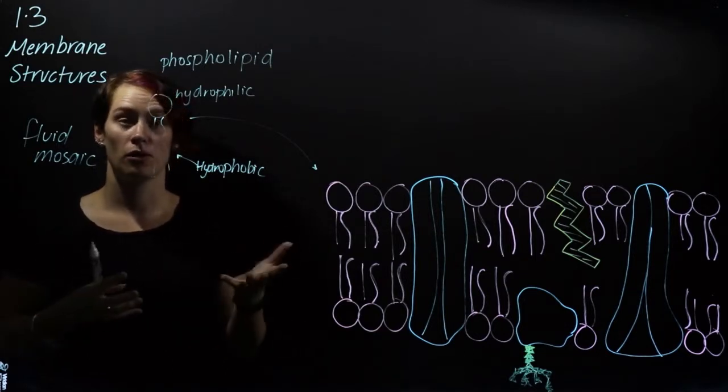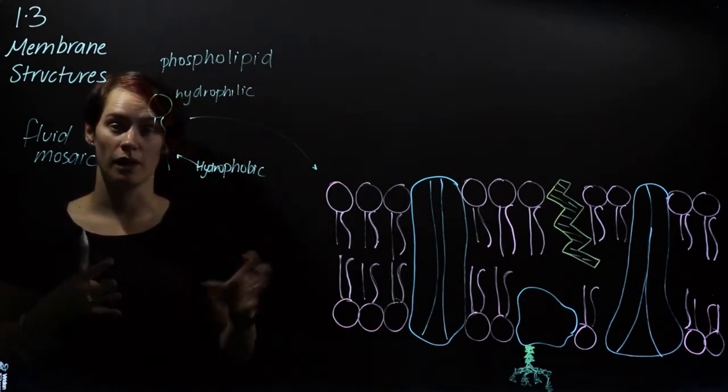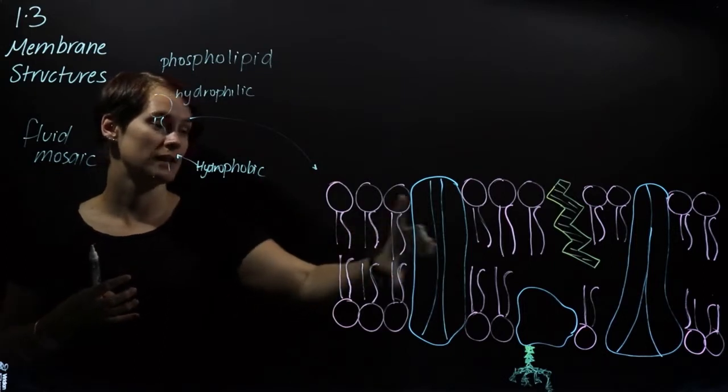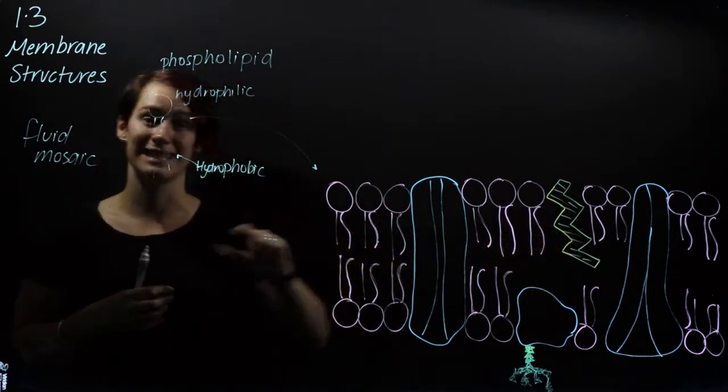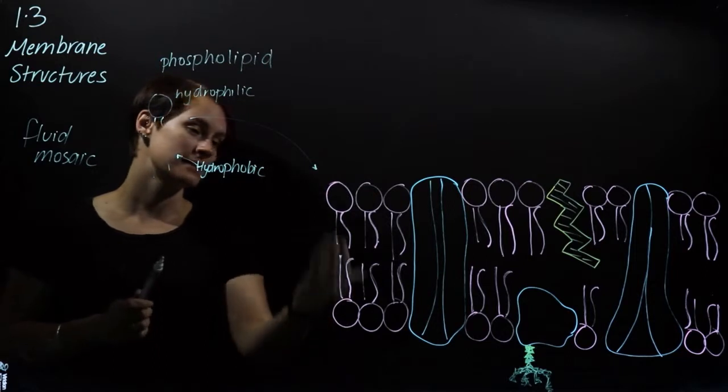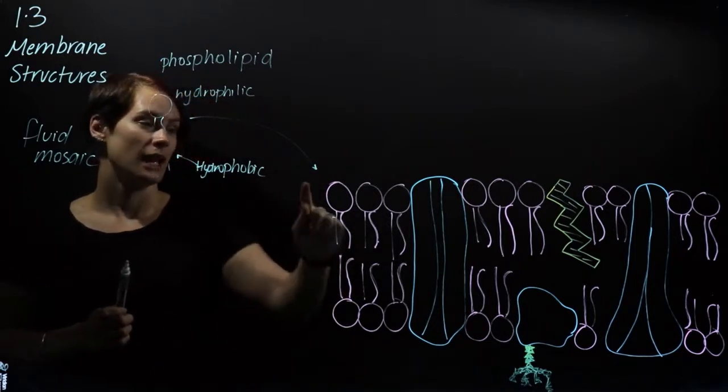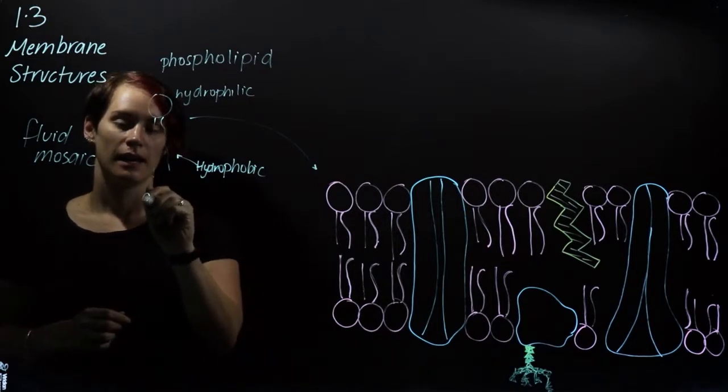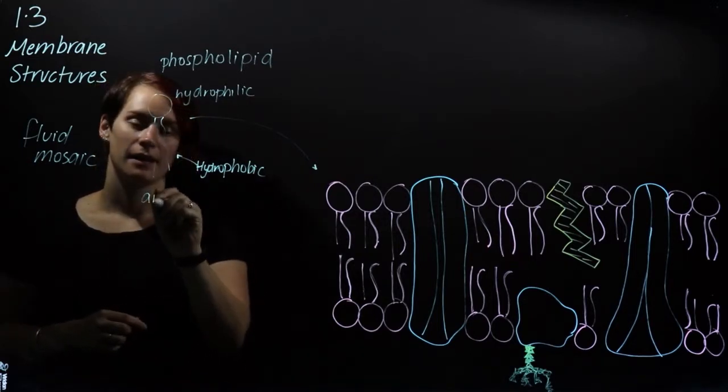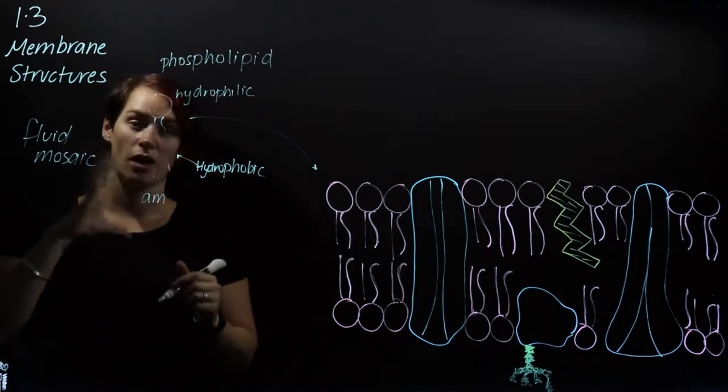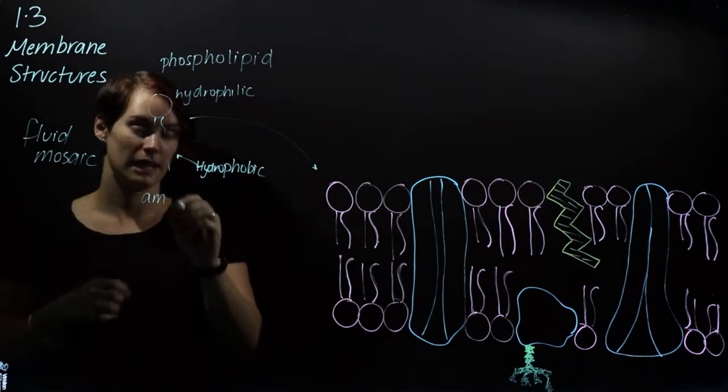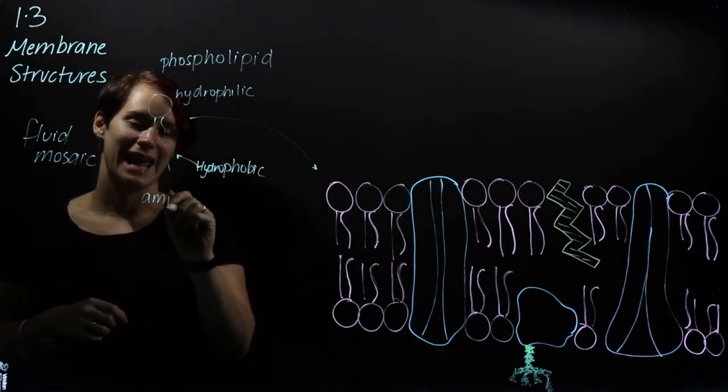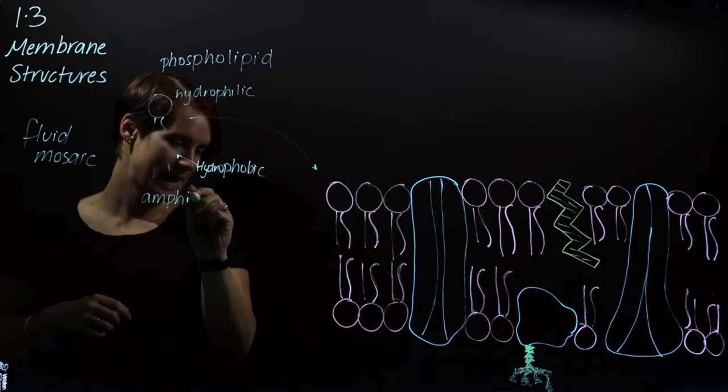So what happens if we pour a whole bunch of phospholipids into some water? They will actually naturally rearrange themselves into this bilayer, this double layer, where the hydrophobic ends, the tails, are pointing inwards and the hydrophilic ends are pointing outwards. Now if a substance is both hydrophilic and hydrophobic at the same time, it's known as amphipathic.